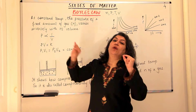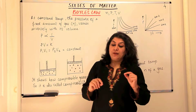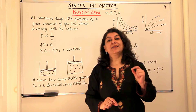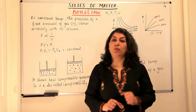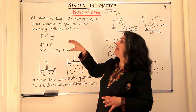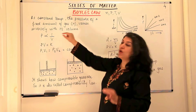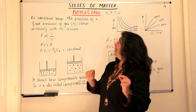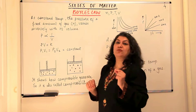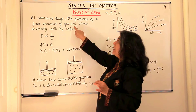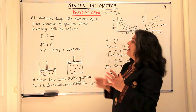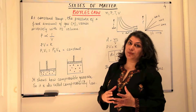So what is Boyle's law? Boyle's law was given by a scientist called Robert Boyle, and the statement of this law is that at constant temperature, the pressure of a fixed amount of gas — fixed amount means the number of moles are fixed — varies inversely with its volume.